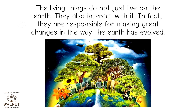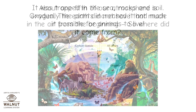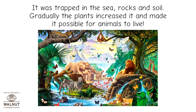The living things do not just live on the earth; they also interact with it. In fact, they are responsible for making great changes in the way the earth has evolved. About one-fifth of our atmosphere is oxygen. The earth did not have that much in the air from the beginning. It was trapped in the sea, rocks, and soil. Gradually, plants increased it and made it possible for animals to live.